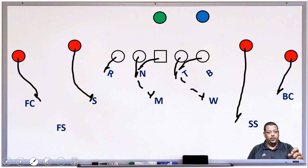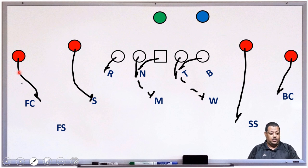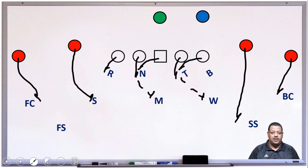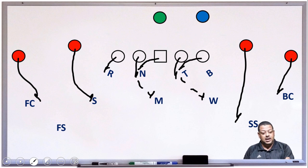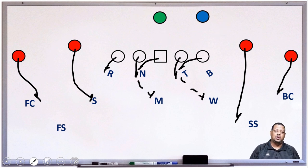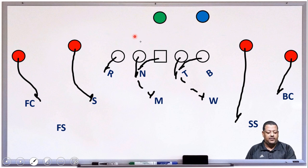Also, our slot receiver would like to pin our Sam inside. They can either do one of two things: block our field corner, or push crack to our free safety — all depends on how they choose to do it from an offensive perspective. Notice our back is even — he's in the same line as the quarterback. Once he receives that ball, his shoulders will be in a 45-degree angle.